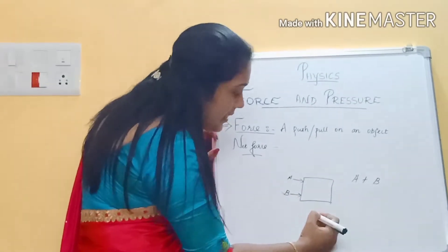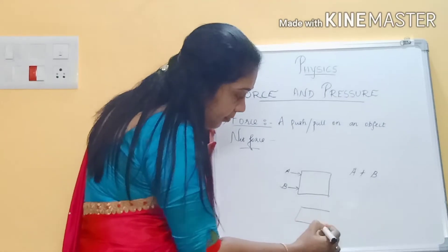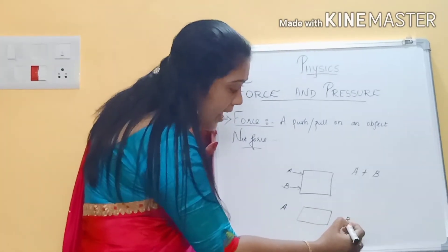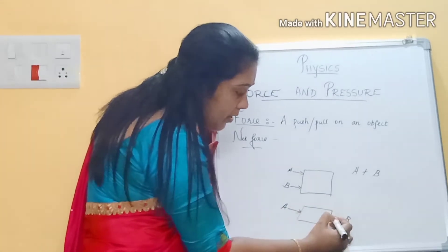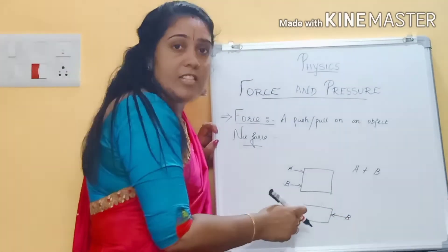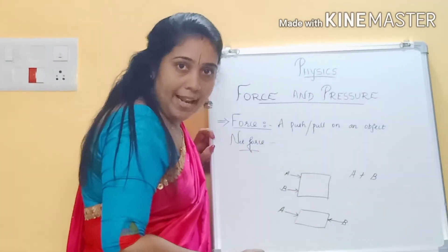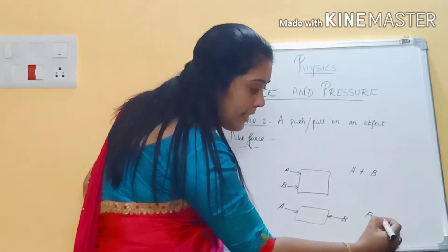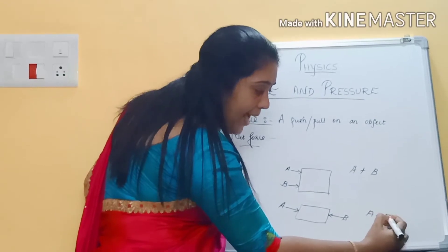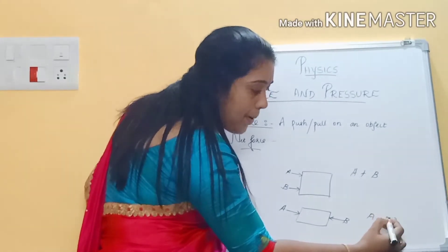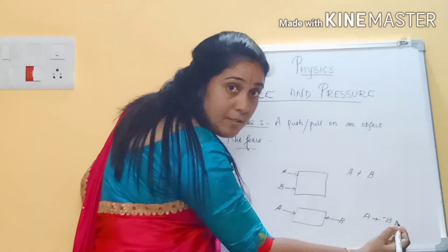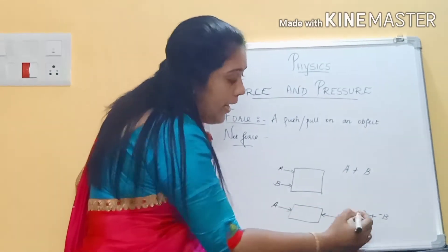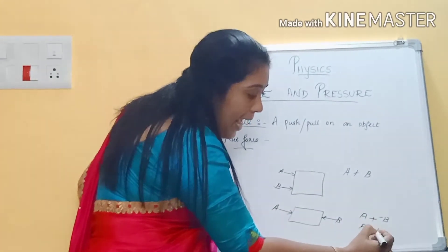If A and B are pushing in opposite directions, the forces are in opposite directions. So the net force is A plus (−B), because B is in the opposite direction. That means the net force is A minus B. If forces are in the same direction, we add them; if in the opposite direction, we subtract them.